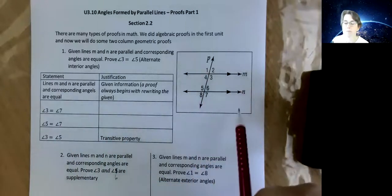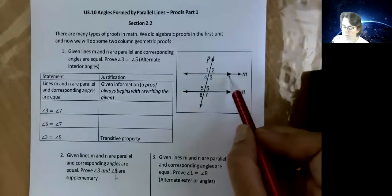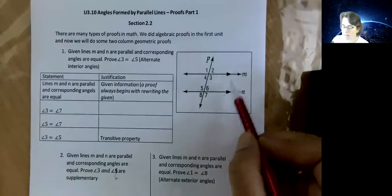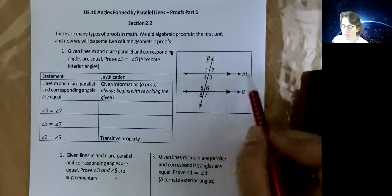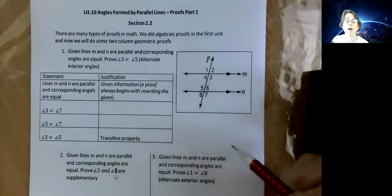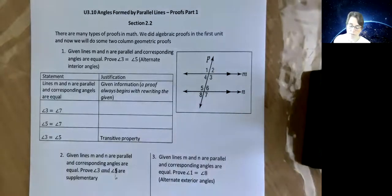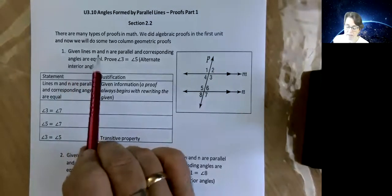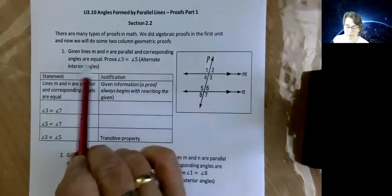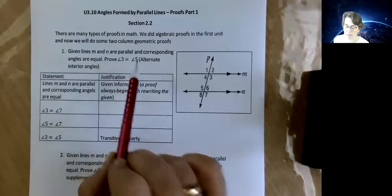So we usually start with a diagram, and there's one sitting over here. We've got lines M and N. You can see these extra arrows here are telling us that these two lines are parallel, and then to make life easy, there are nice little angles that are numbered off. And P is our transversal. So this is what we're supposed to do: given lines M and N are parallel, and corresponding angles are equal. Prove that angle 3 is equal to angle 5.